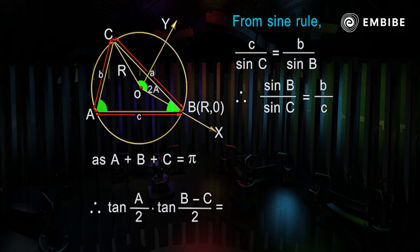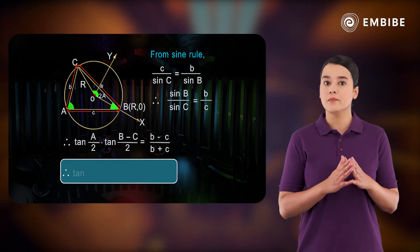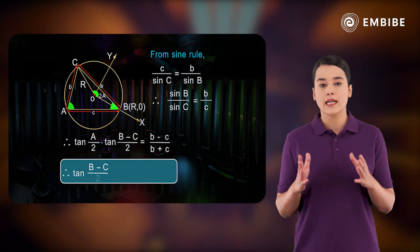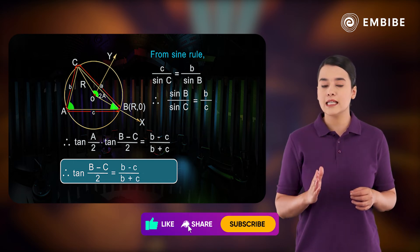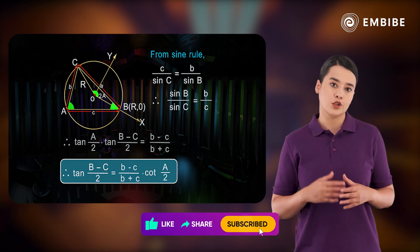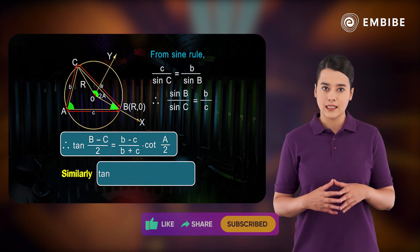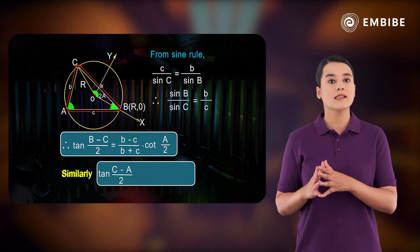Therefore, tan of B minus C over 2 is equal to b minus c over b plus c times cot A over 2. Similarly, tan of C minus A over 2 equals c minus a over c plus a times cot B over 2.